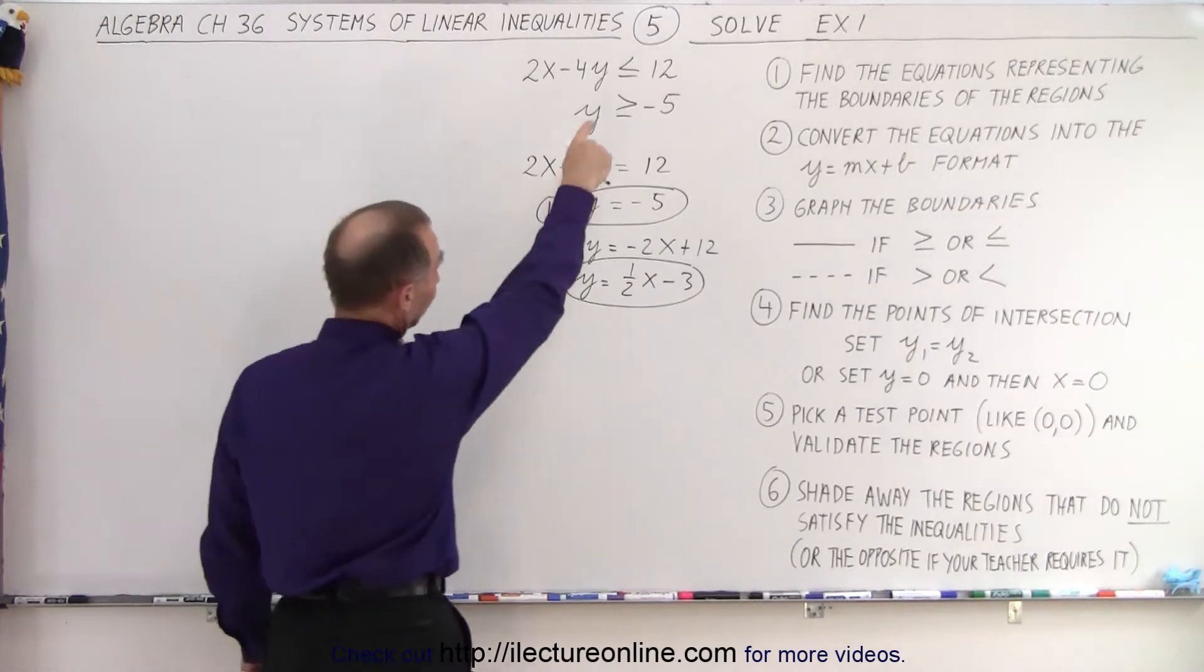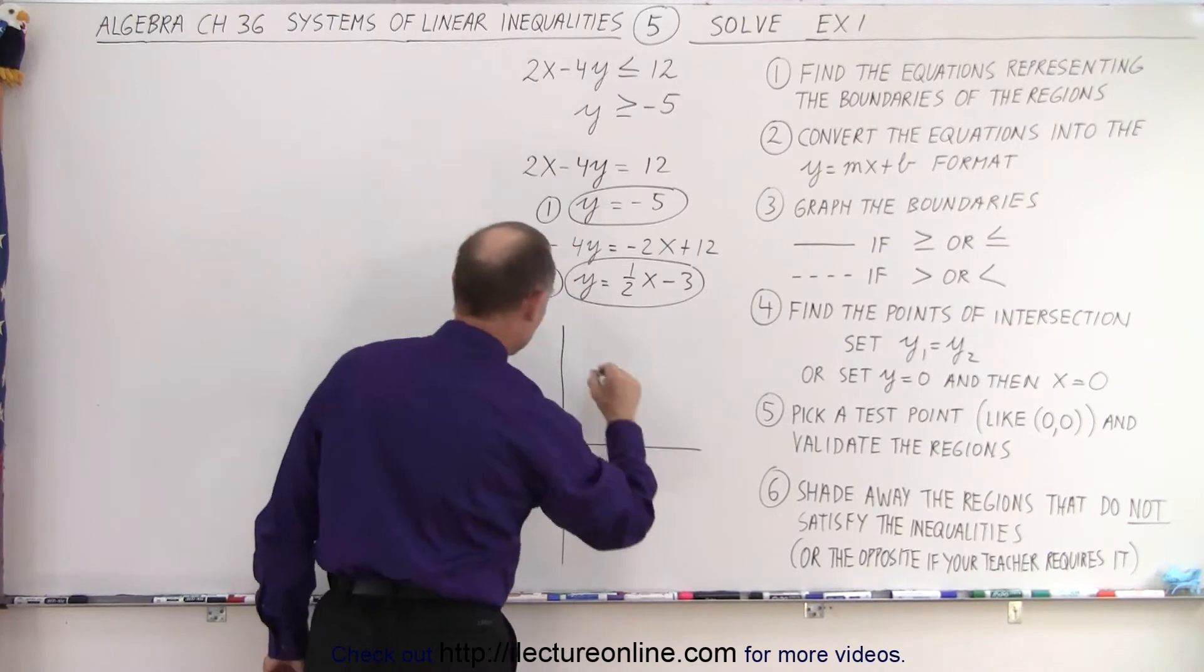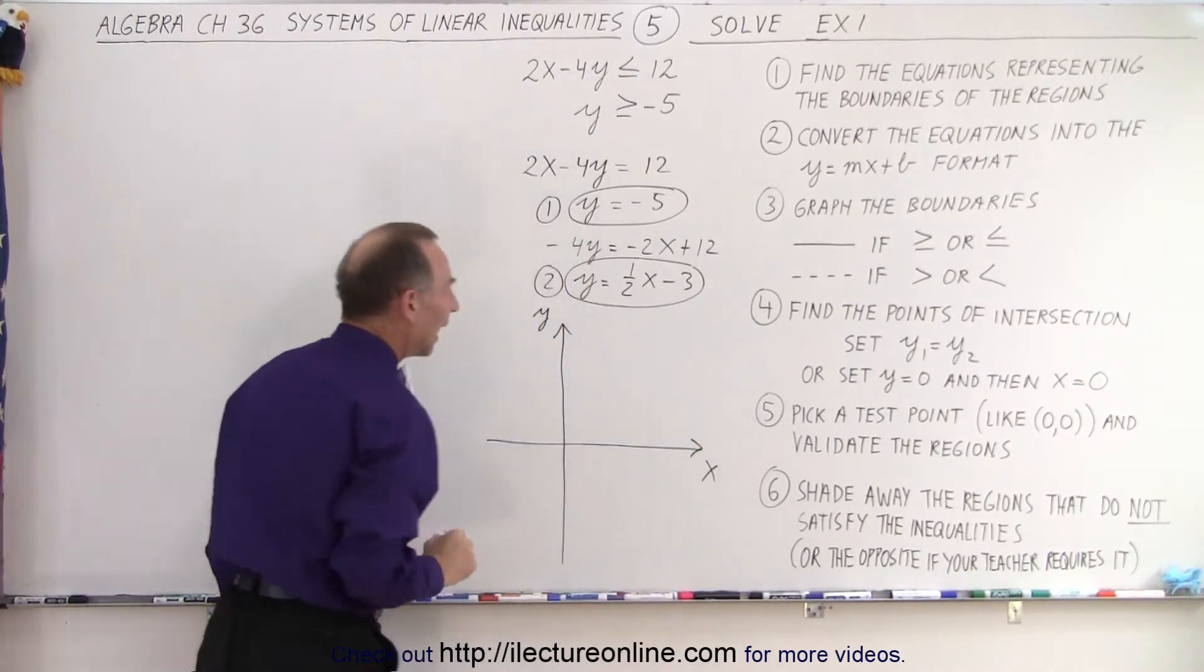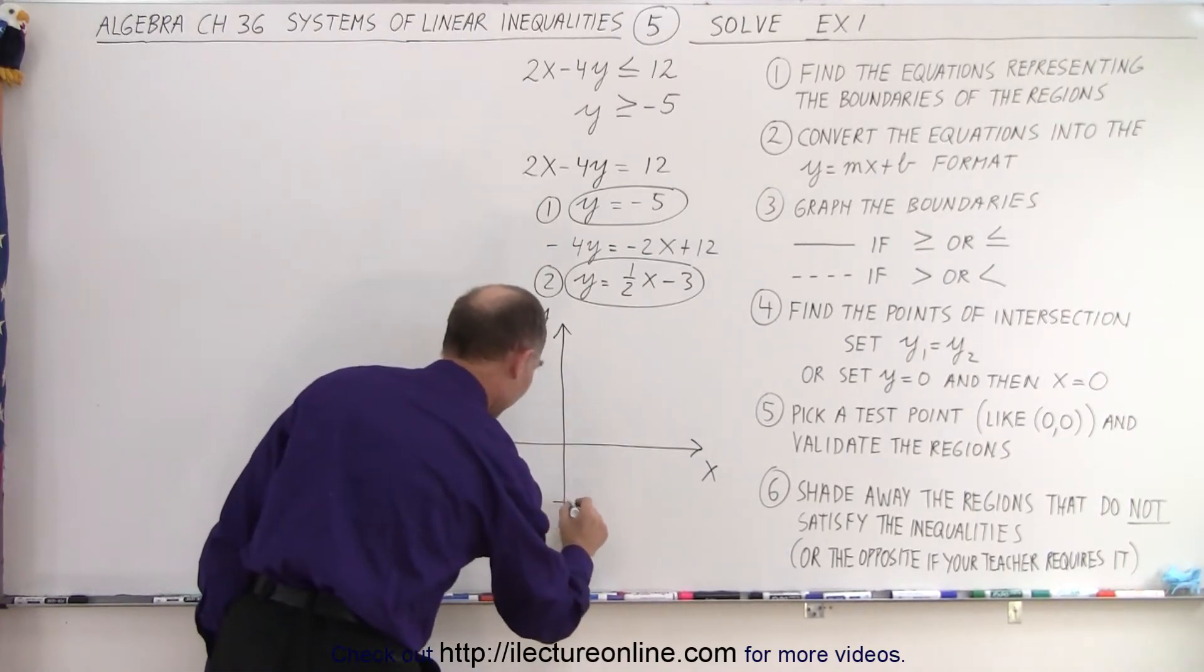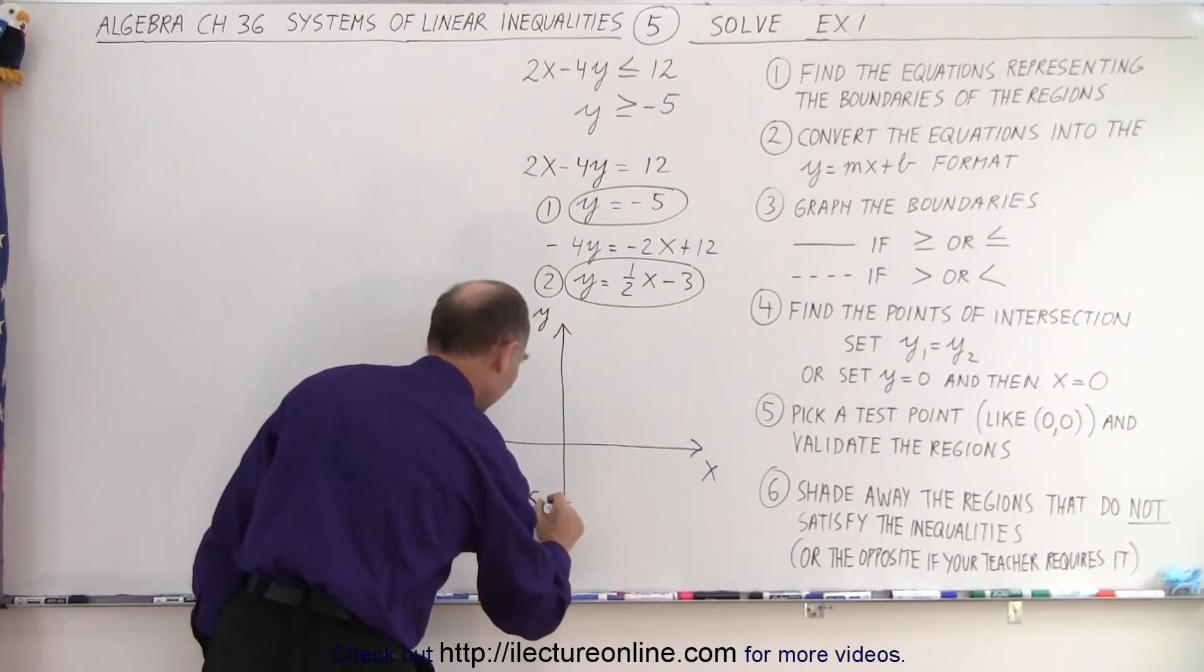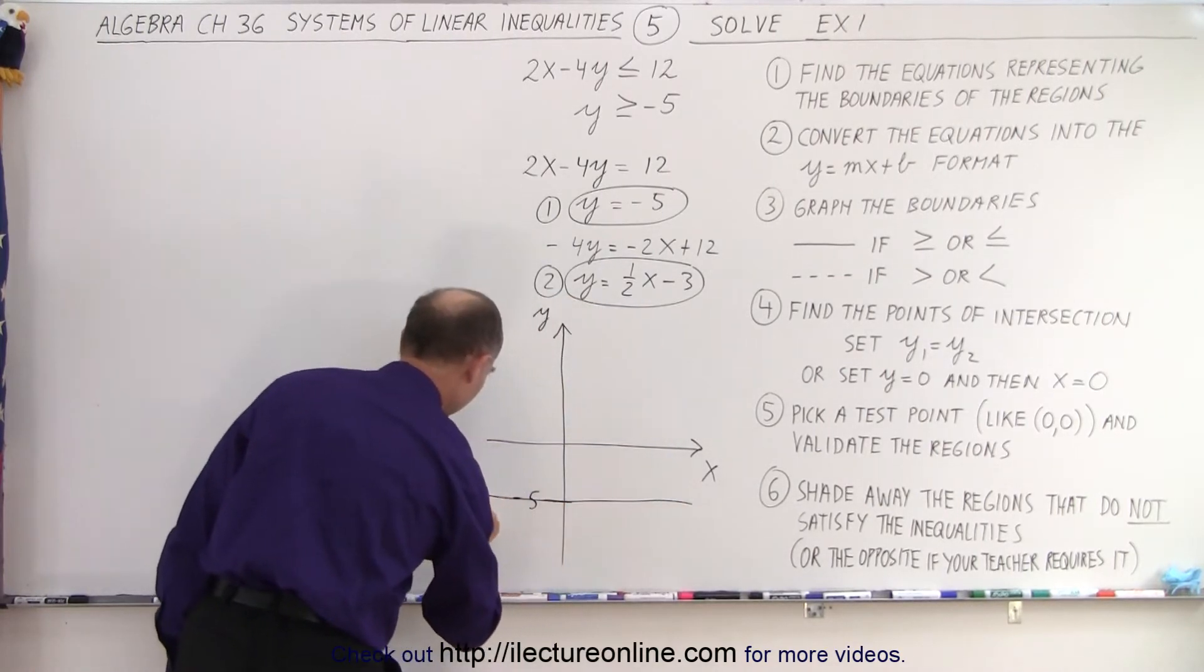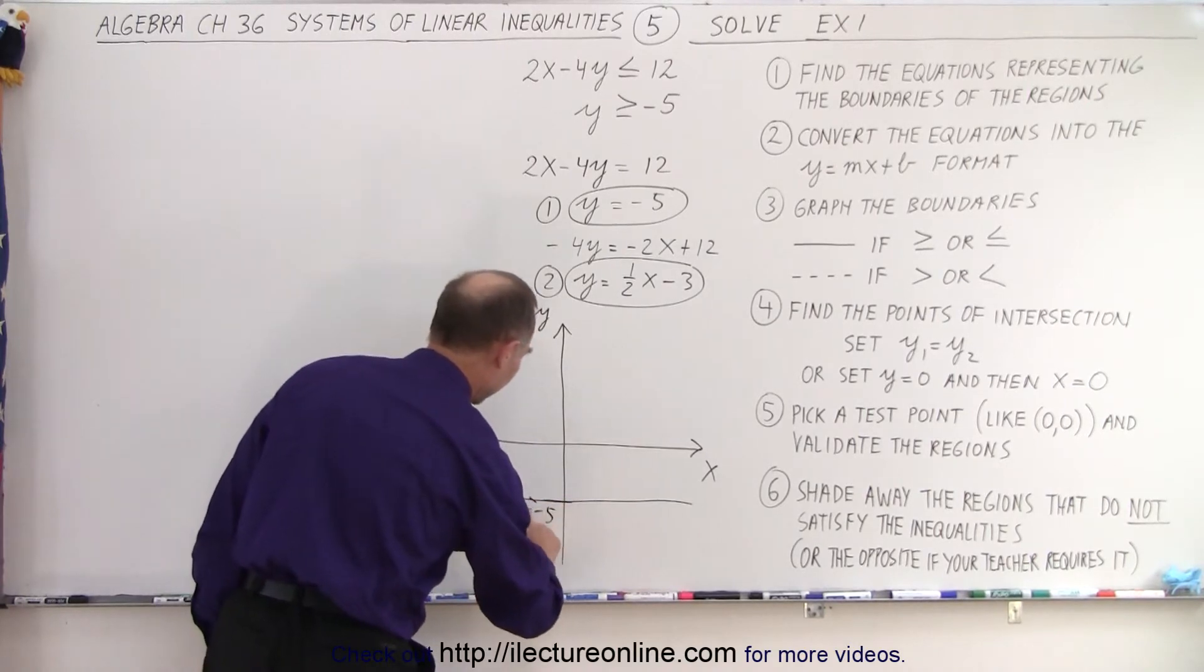So when we graph them, they will look like this. Here we have the y-axis, the x-axis, and the first line is y equals negative 5. So let's put negative 5 over here, and then we have a solid line going across like this, and I guess I should have put the negative 5 a little bit lower. There we go.